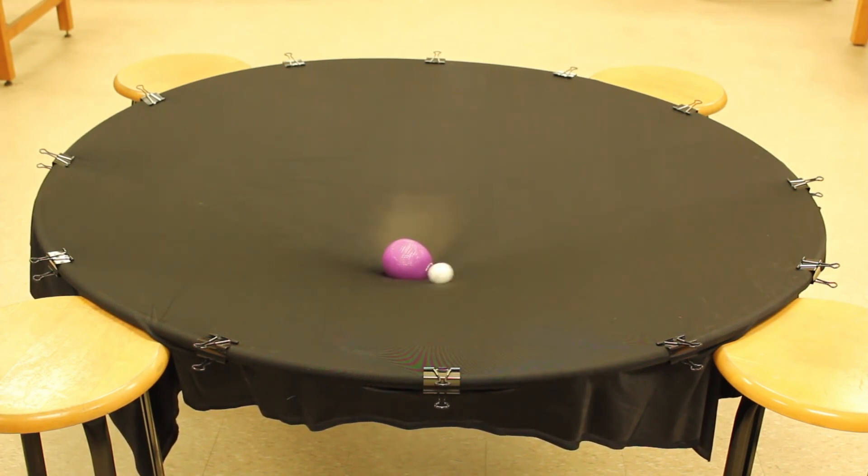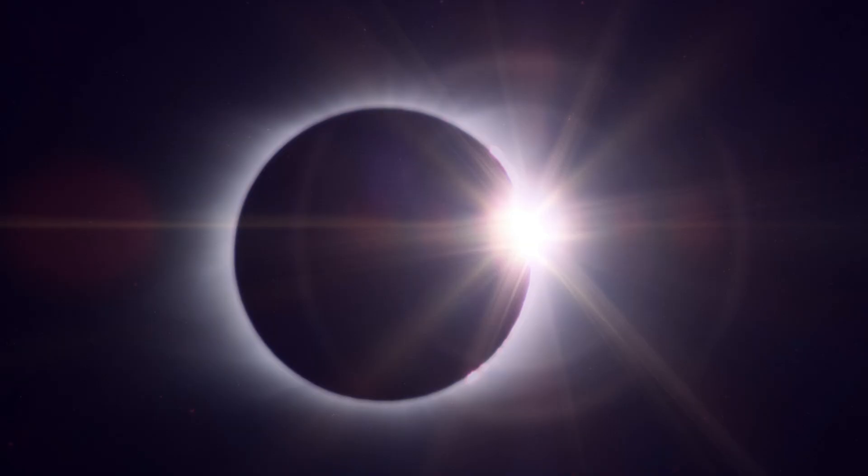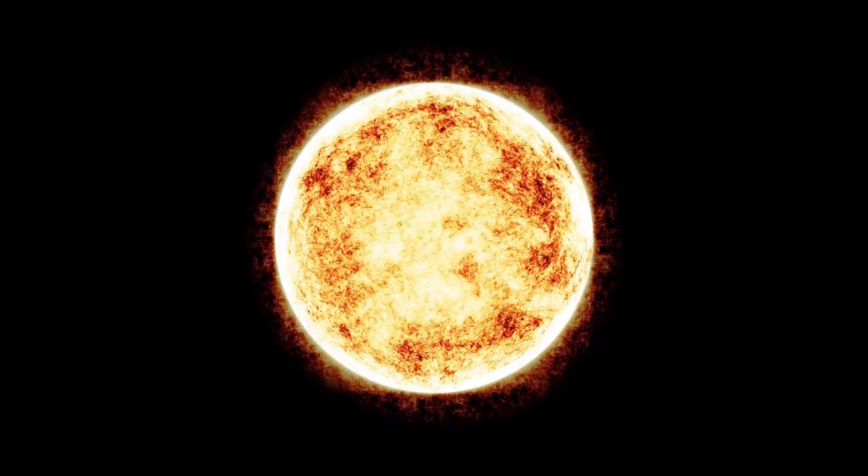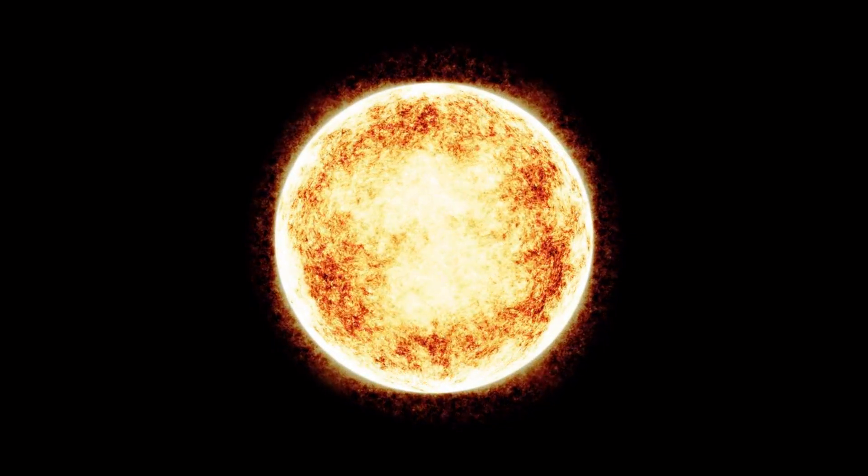Other objects will naturally roll towards this well, creating the effect we call gravity. This is the basic concept behind general relativity. Massive objects, like planets and stars, cause spacetime to curve, creating the force we know as gravity.